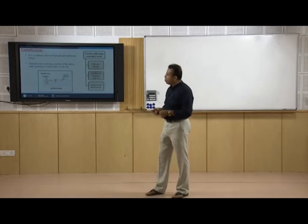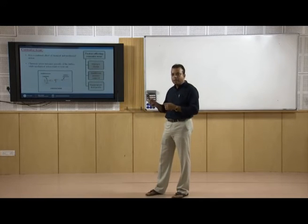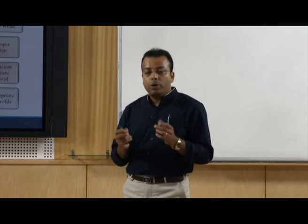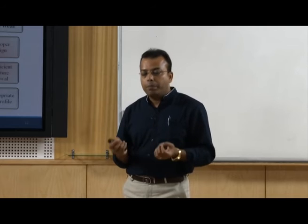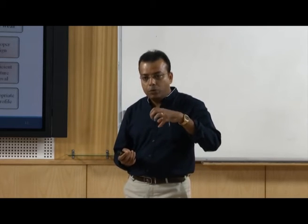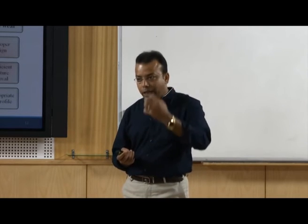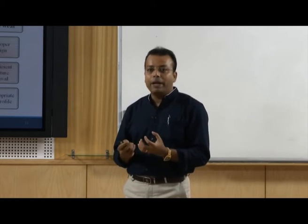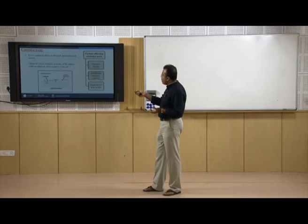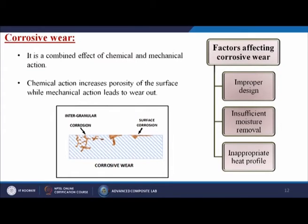Next is corrosive wear. From the name itself, corrosive wear is dependent upon the corrosion of that particular material. Corrosion is a mechanochemical process — first the material is chemically attacked, then automatically its mechanical properties go down, by which wear takes place. It is a combined effect of chemical and mechanical actions. Chemical action increases porosity of the surface while mechanical action leads to wear out.